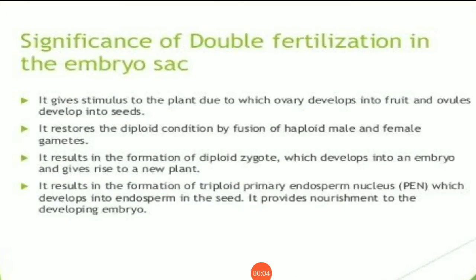Next is significance of double fertilization. It gives stimulus to the plant, due to which ovary develops into fruit and ovules develop into seeds. Meaning, jab double fertilization hota hai, yeh embryonic development ko trigger karta hai, jiske vajah se finally seed aur fruit ka formation hota hai. Second point: it restores the diploid condition by fusion of haploid male and female gametes. Matlab, jo male aur female gametes fuse hote hain, inke andar jo recombination hota hai, woh donon characters ka hota hai — that is jo male gamete, that is the paternal characters, aur female gamete, that is the maternal characters — jiske vajah se kya hota hai, which results in variation, aur yeh diploid condition ko bhi restore karta hai.